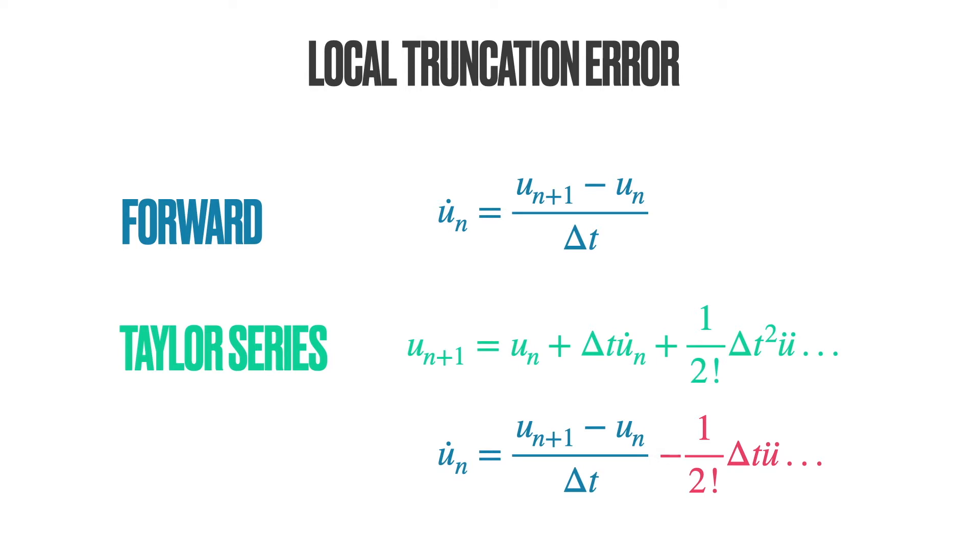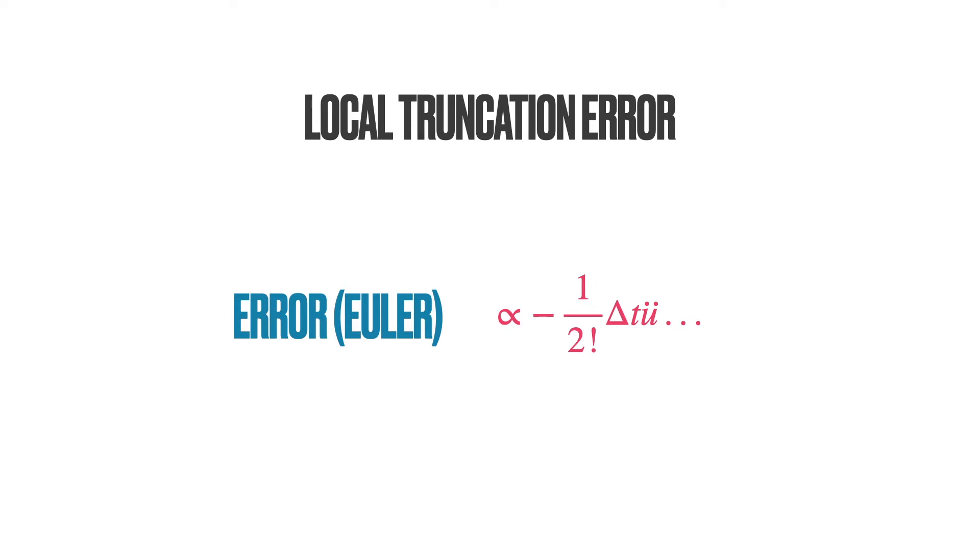The three dots refer to all higher-order terms. In simple terms, the error, that is, the difference between the Euler approximation and the true Taylor expansion at time t n is proportional to the time step size, delta t. Thus, if we reduce the time step size by half, we should expect the error to reduce by half. Let me repeat. If we reduce the time step size by half, we will reduce the error by half. If we double the time step size, we will double the error. Keep this fact in mind.